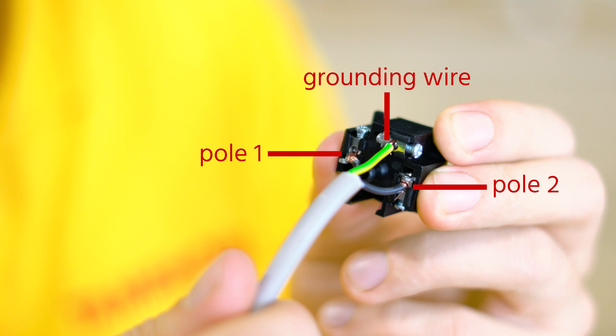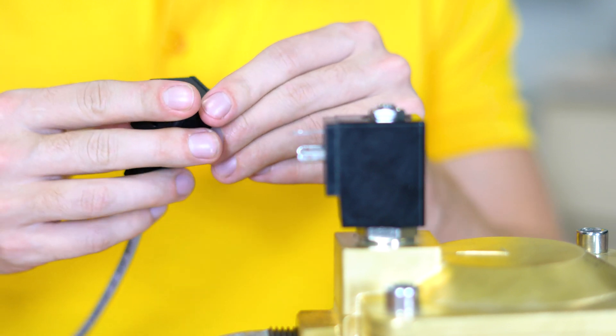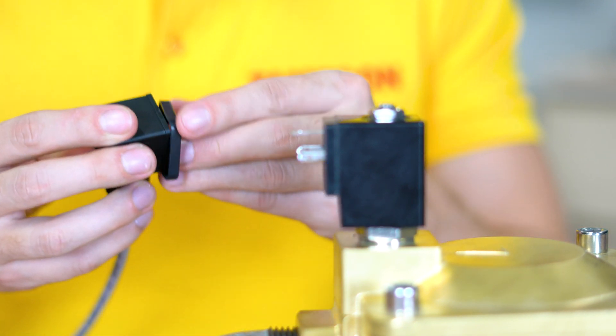Always connect to the earth or grounding wire. Never use the pipe itself for this. Ensure the connector is on properly, so that no moisture comes between the coil and the connector.